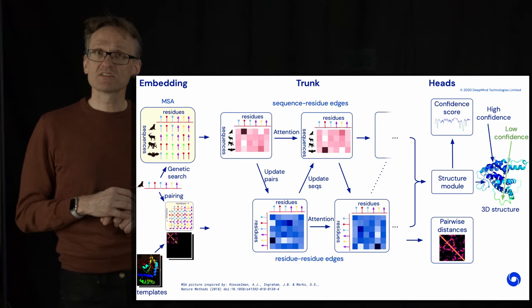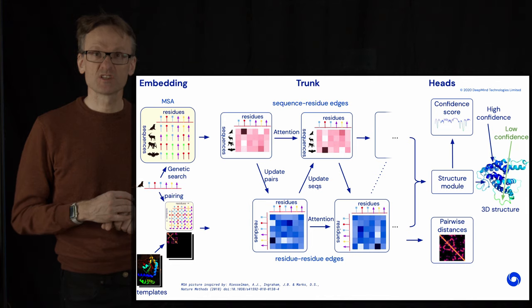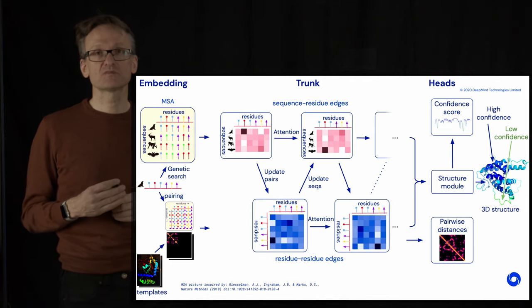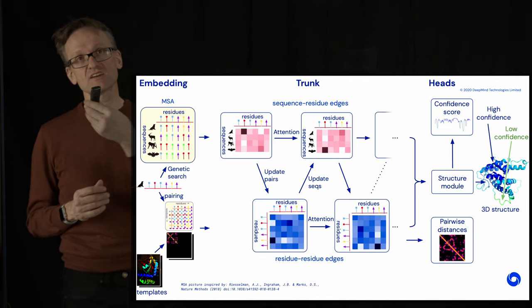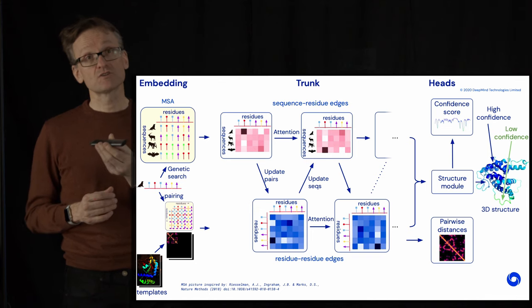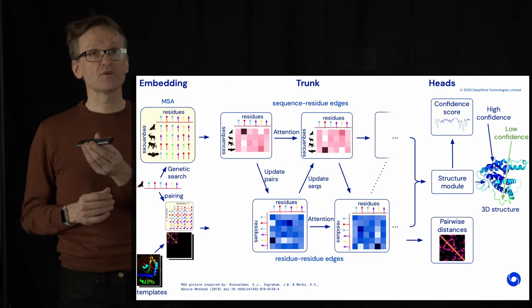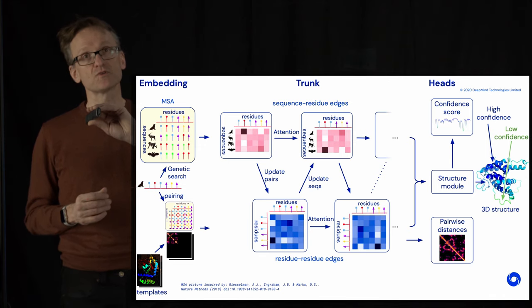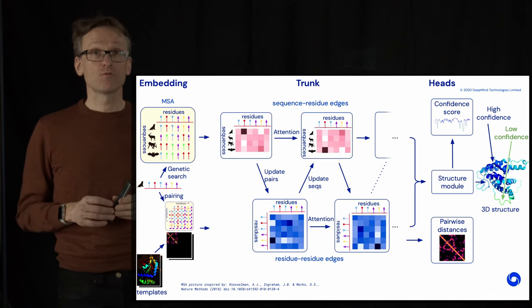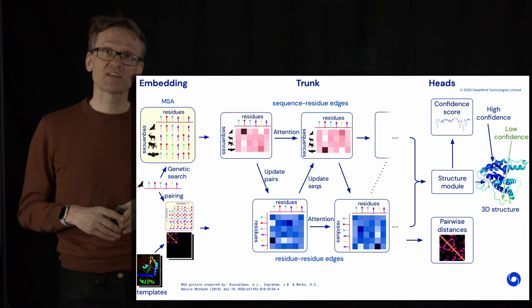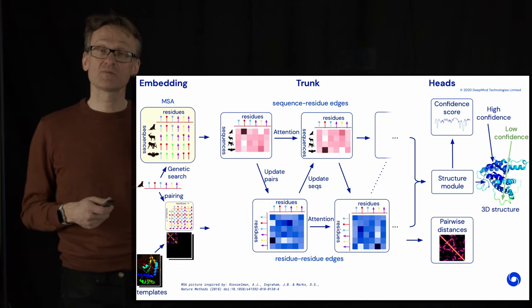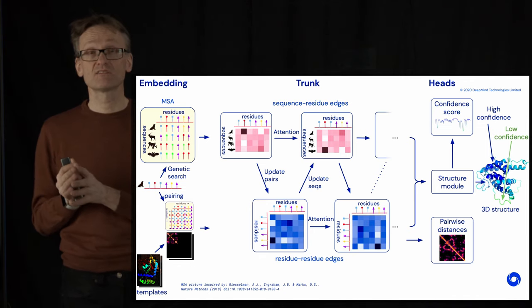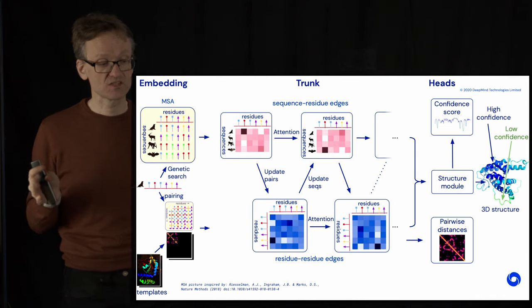They also surprisingly encoded a lot of physics in this model, because physics has all these features that it's rotationally and translationally invariant. So if I have a rotated set of coordinates that should correspond to the same prediction. Now we can of course correct for that, but having that built into the model itself makes it much easier to let the model work as a big black box and do the entire prediction.